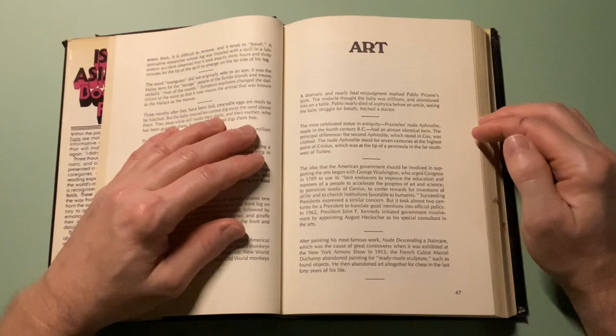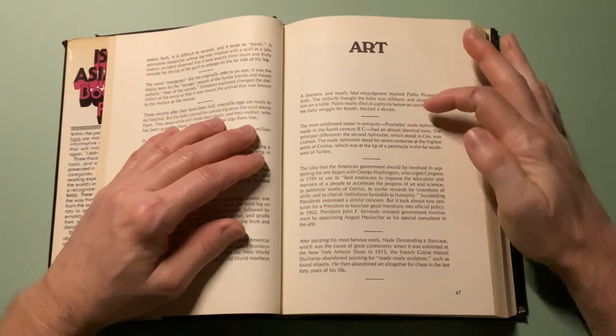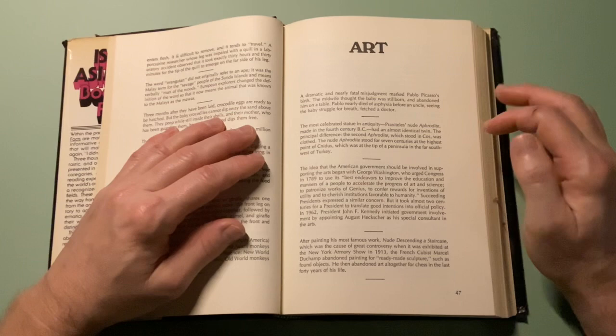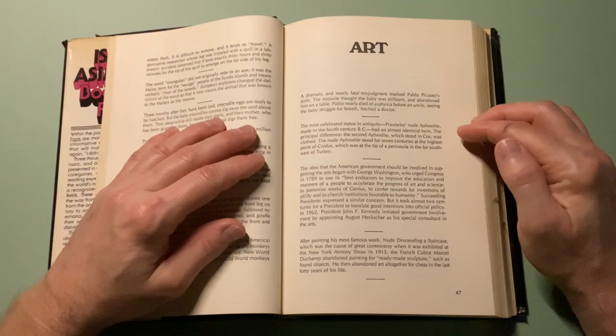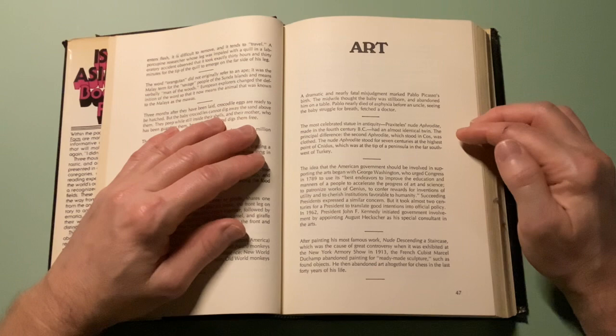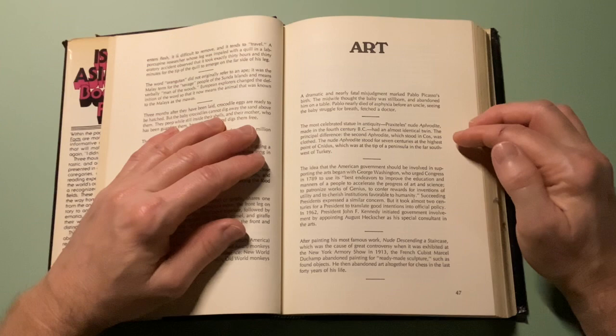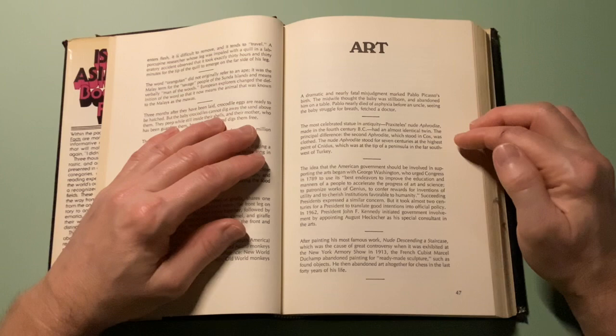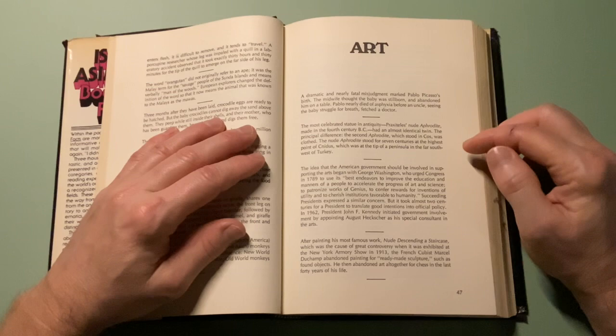The most celebrated statue in antiquity, Praxiteles' nude Aphrodite, made in the 4th century B.C., had an almost identical twin. The practical difference: the second Aphrodite was clothed. The nude Aphrodite stood for seven centuries at the highest point in Cnidus, which was the tip of a peninsula in the far southwest of Turkey.